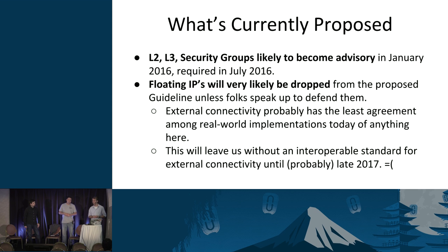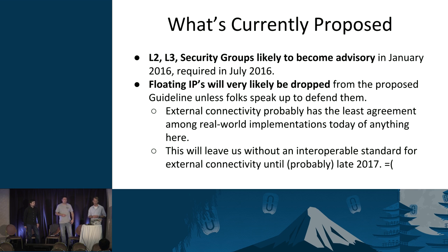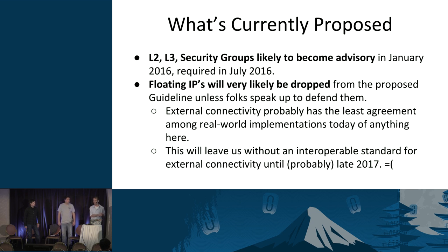Floating IPs, on the other hand, were a bit more controversial. If you read the proposal, floating IPs are currently in there, but it seems pretty likely at this point that there's not enough consensus and they'll probably wind up falling out of the spec before it goes up for approval. So if you have an opinion about whether you think we should be able to depend on floating IPs or not, you should probably go comment on that spec. The 'negative one fairies' are out on floating IPs — if you're a plus-one fairy, now would be a good time to speak up.